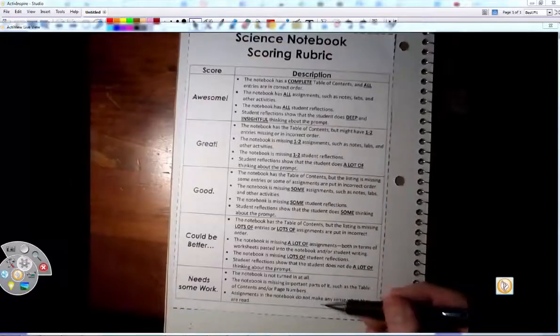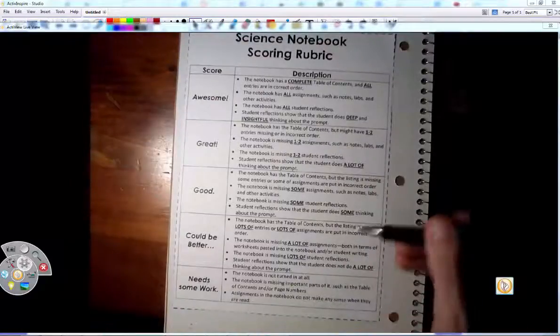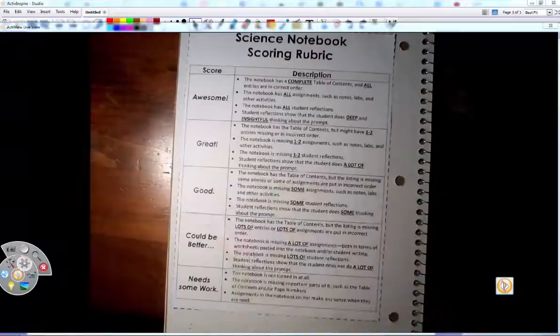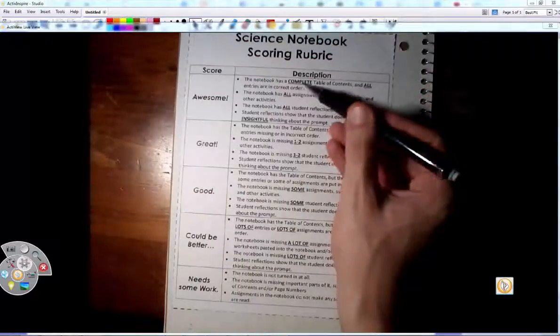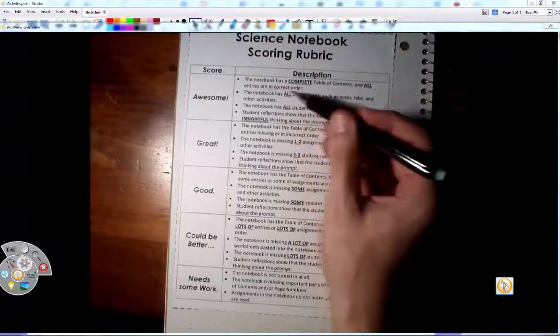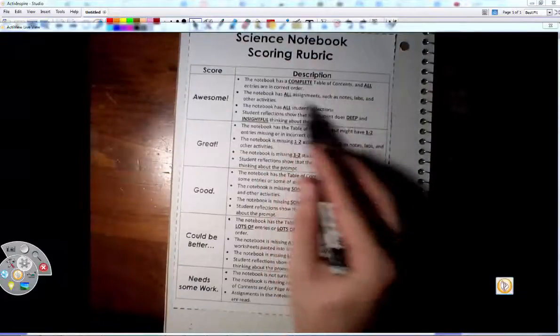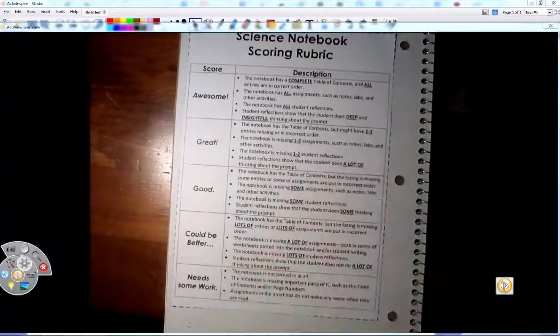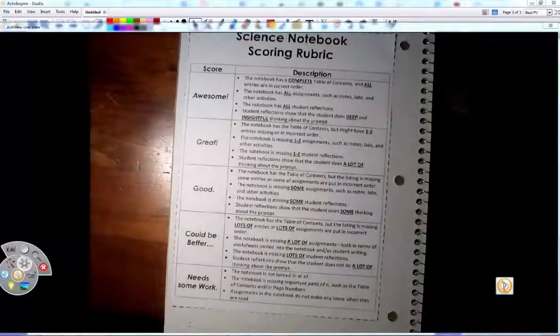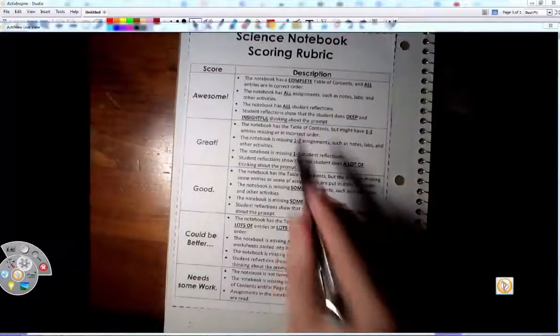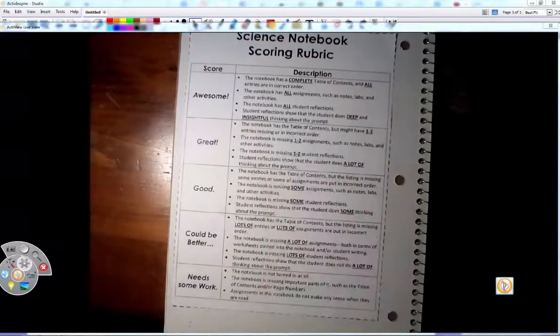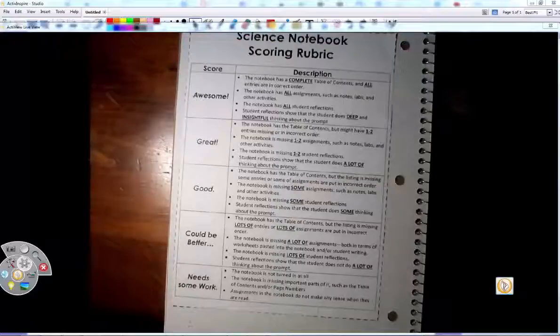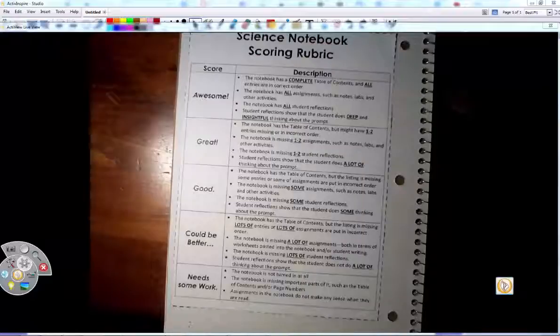At minimum, we want to be good or better, but in the case of the science notebook, we really want to be awesome. We want to have a complete table of contents and all entries in the correct order, all assignments, notes, labs, other activities all together, all student reflections. And then at the end of the week, whenever it's time for the test and I ask you to write your reflection, I want you to do deep and insightful thinking about the prompt. If I ask you to write about what we learned this week, I want you to think about not just what we learned, but how it connects to science and more things like that.